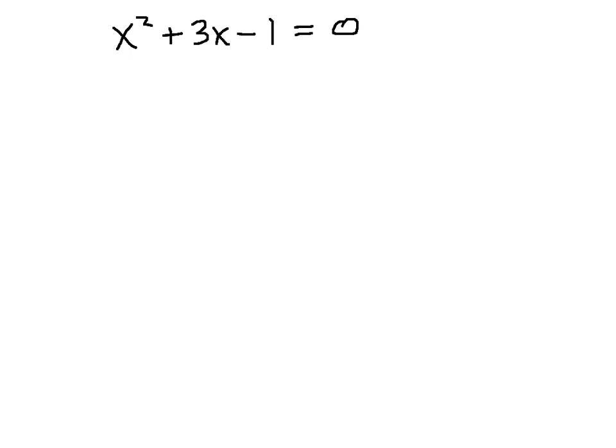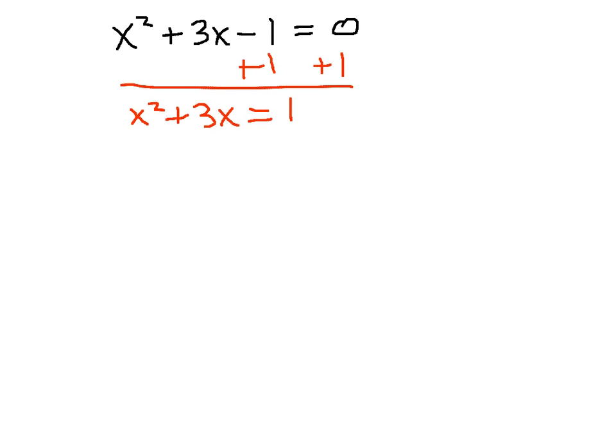What I really want on this left-hand side is a perfect square trinomial. In these problems, the first thing you'll want to do — and actually the first two steps are interchangeable — but I want to move this 1 to the other side, so I'm left with x squared plus 3x. The reason I do that is because it's this x squared term and this 3x that are the two pieces you're going to be given in each problem. Those are two out of the three pieces we need for a perfect square trinomial.